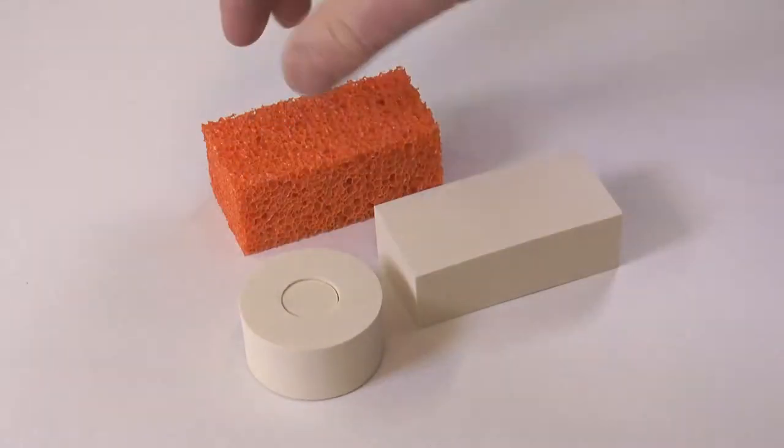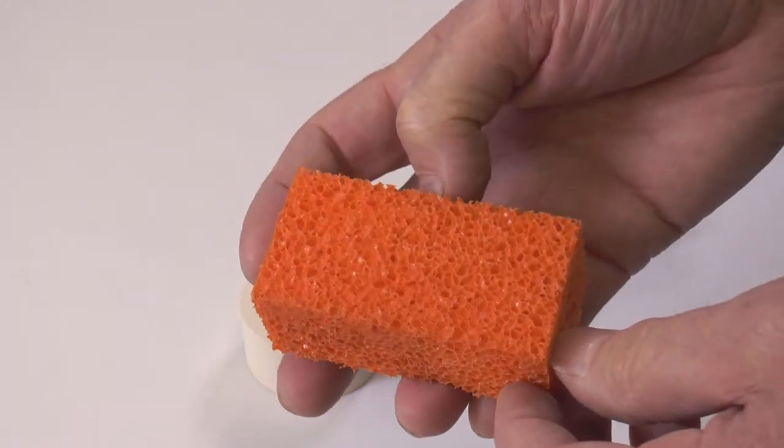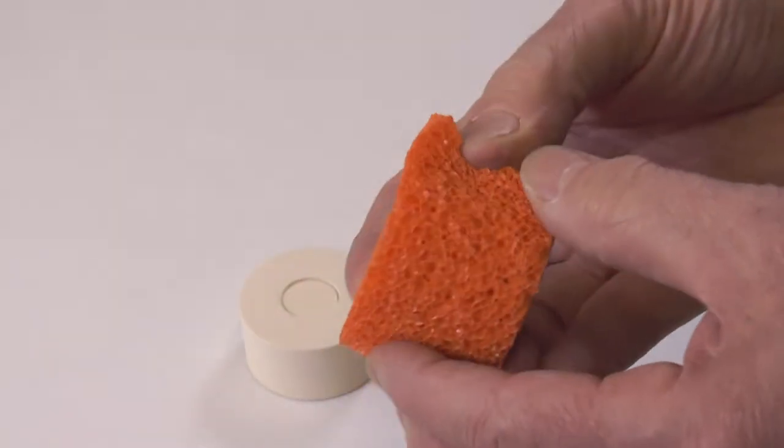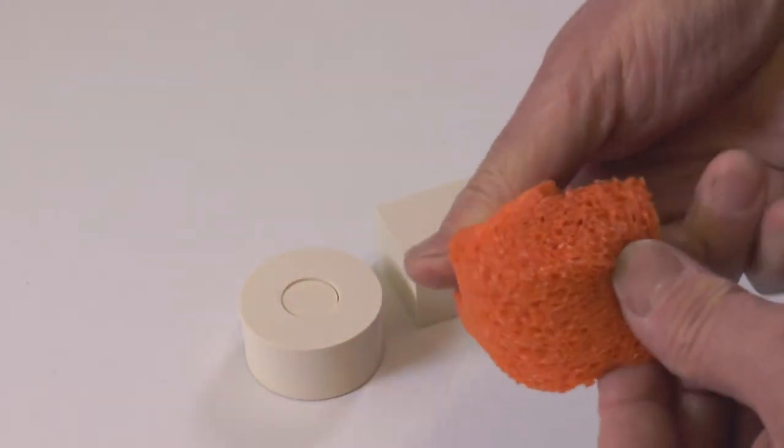Finally, the Orange Texture Sponge. Easy to squeeze and to shape into smaller areas for dabbing and texturing.